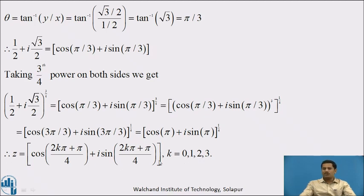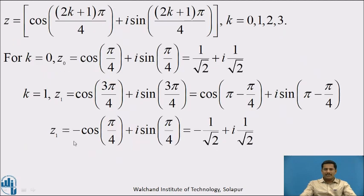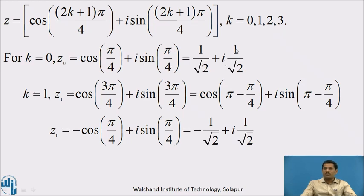This equation provides all the required values. Taking π common, z = cos((2k+1)π/4) + i·sin((2k+1)π/4). Substituting k = 0, we get z₀ = cos(π/4) + i·sin(π/4) = 1/√2 + i·(1/√2).